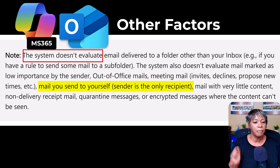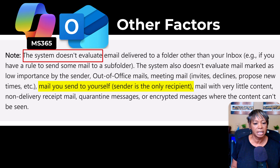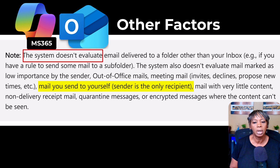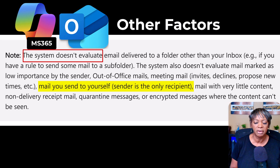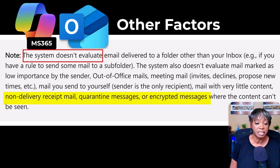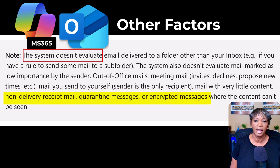Notice here I have that high priority icon next to an email. Copilot will not evaluate messages that are marked as low importance by the sender, or out-of-office emails, meeting invites, declines, or proposed new times — those will not be classified as low, medium, or high. Mail you send to yourself — I'm a little on the fence about this one, because there are times where I send myself a message and based on the content it might be something important I'd like it to classify. But mail with very little content may not get classified. Non-deliverable receipts, quarantine messages, or encrypted messages are not evaluated in this prioritization process.